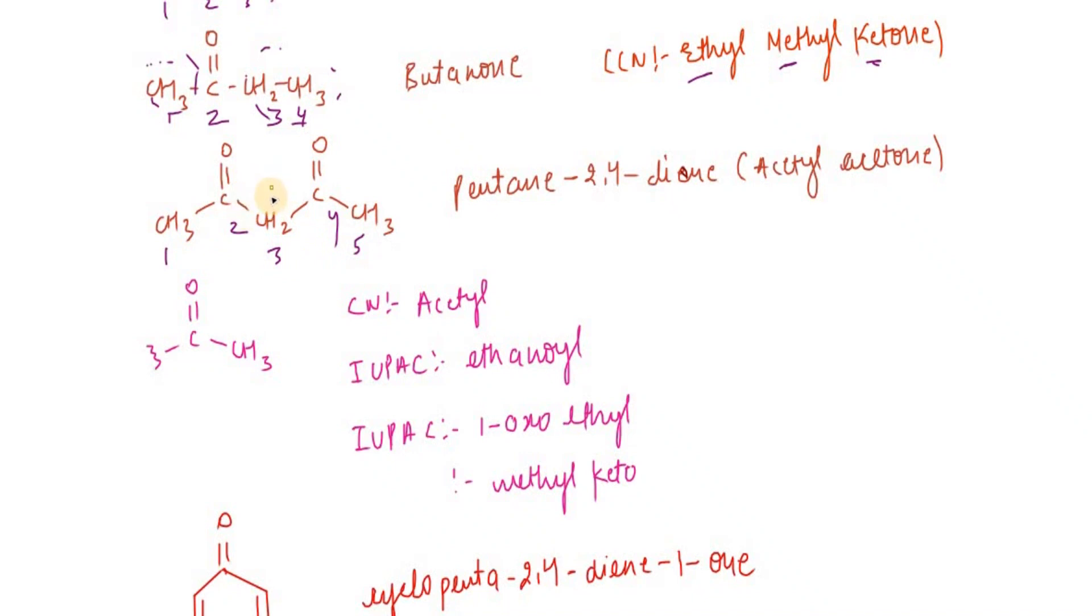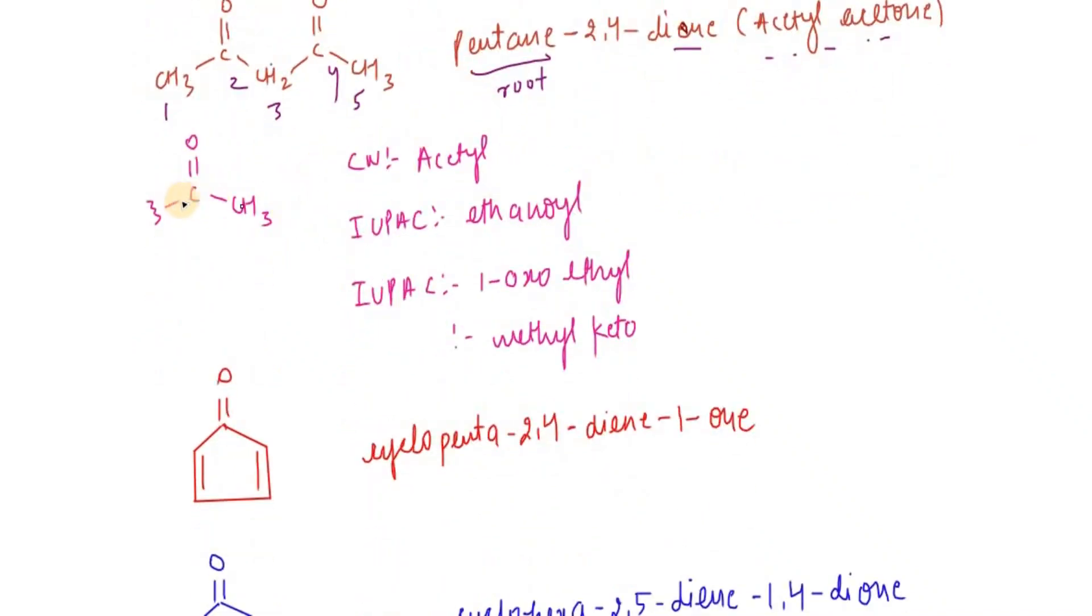For example, numbering one through five for pentane-2,4-dione. Pentane is the root word, this is the secondary prefix, and 2,4-dione is the suffix. The common name is acetyl acetone.